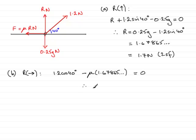So rearranging this for μ. If I was to add this term to both sides and then divide by 1.67865, you'd find that I get μ equals 1.2 cos 40°, all divided by the 1.67865 and so on.